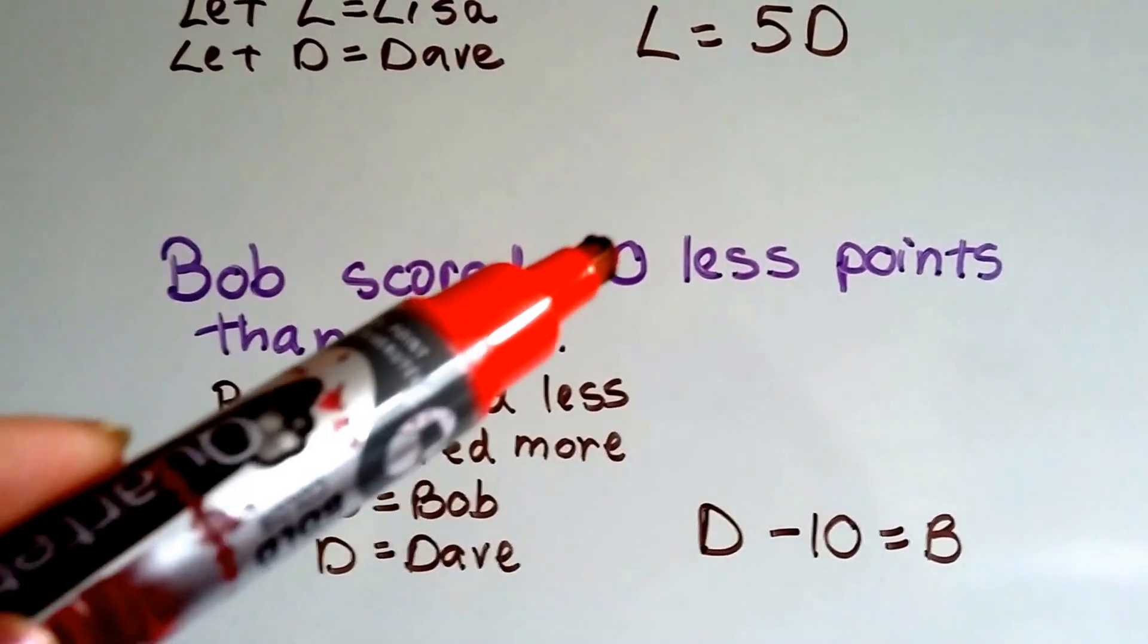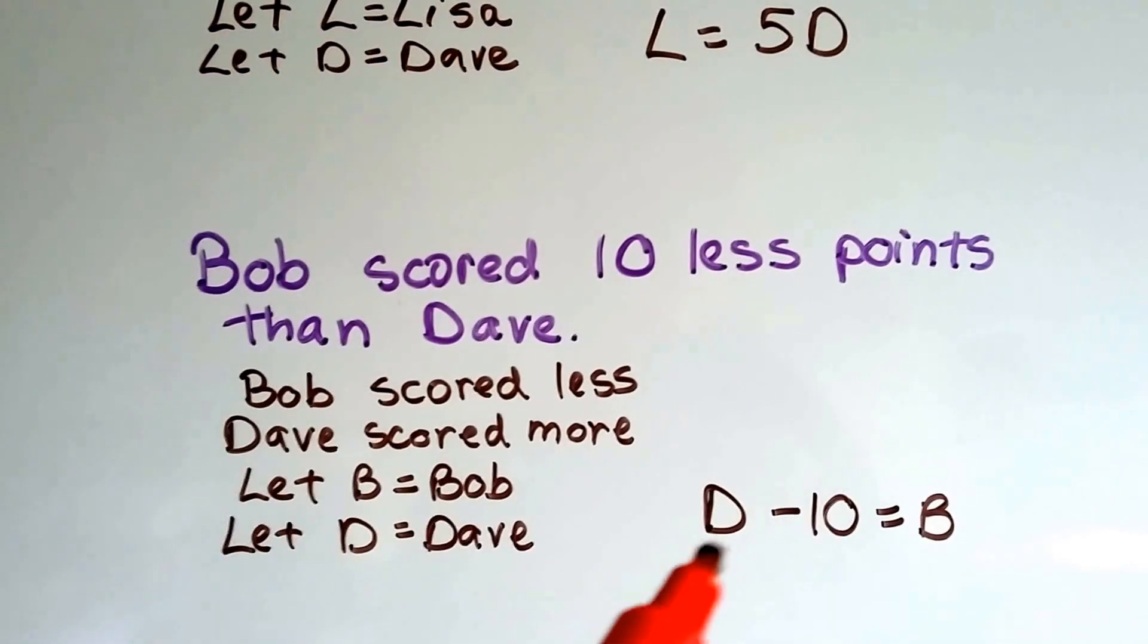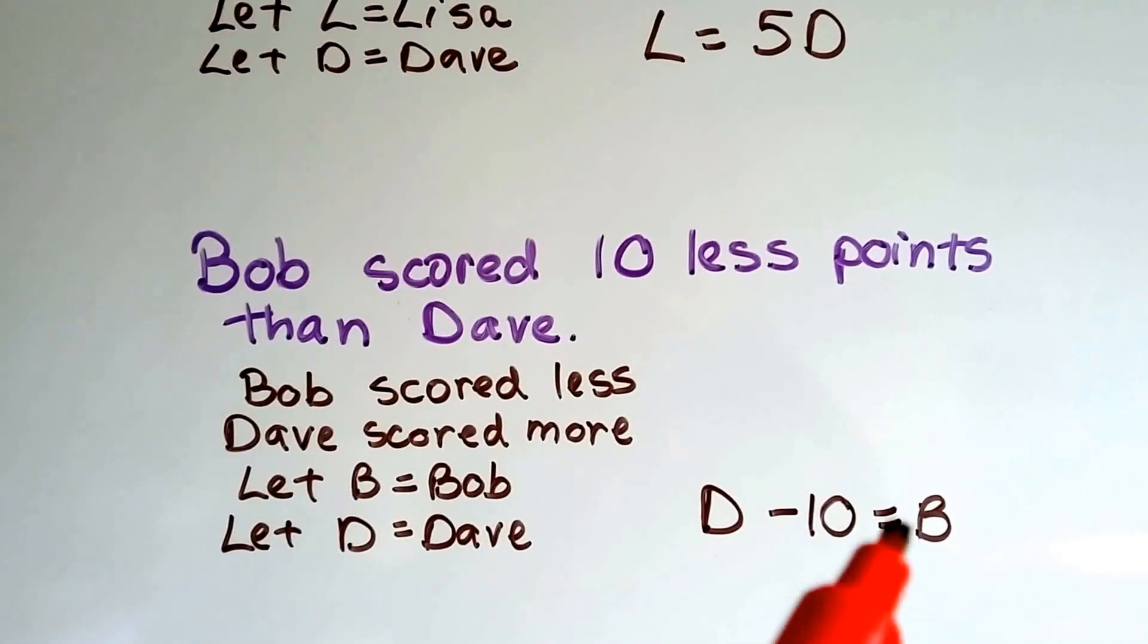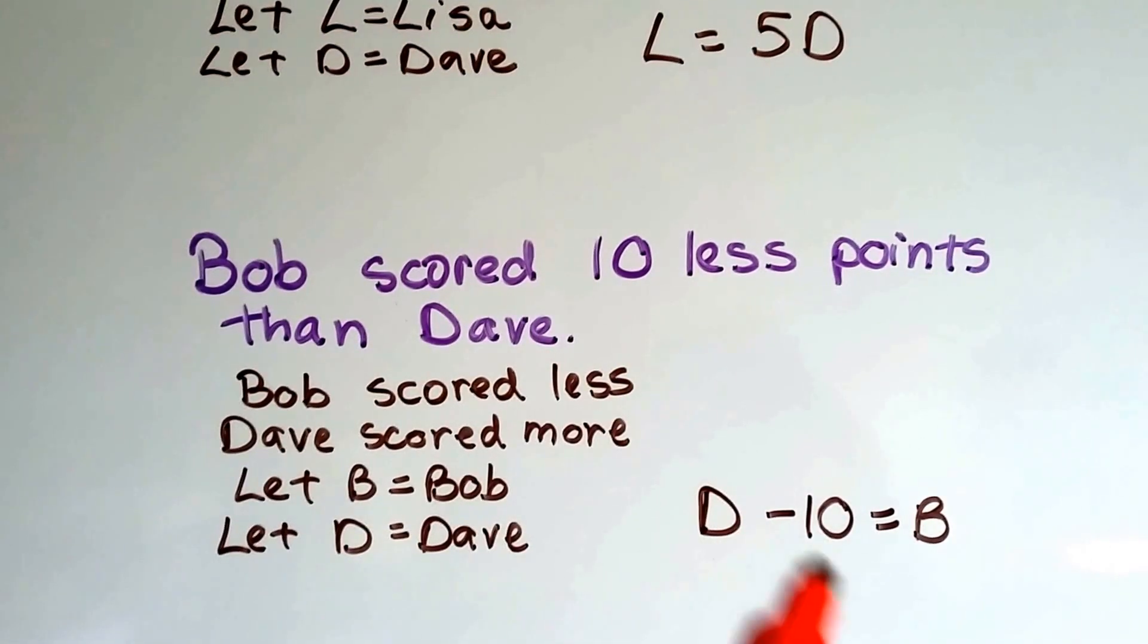All we have to do is take Dave and take away that 10. So if we have B for Bob and D for Dave, we just do Dave minus the 10 is going to equal Bob. Because Bob has 10 less than him. So we just take that 10 away.